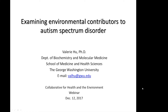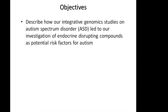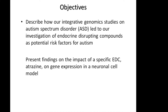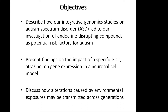Thank you for the invitation to present some of our ongoing research in this forum. What I'm going to do, first of all, is to describe how the work that we have done on autism, taking an integrative genomics approach, has led us to investigating endocrine-disrupting compounds as potential risk factors for autism. I also want to present a few findings on the impact of a specific EDC, atrazine, on gene expression in a neuronal cell model, and then wind up by discussing how alterations caused by environmental exposures may be transmitted across generations.